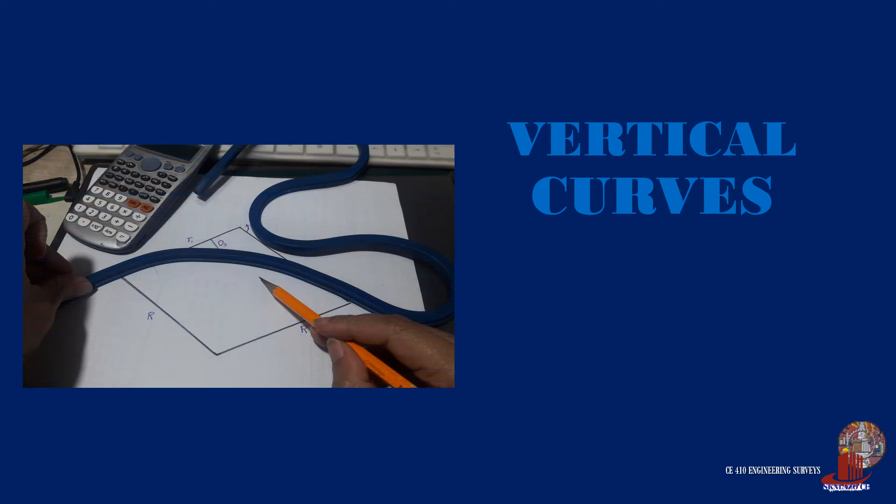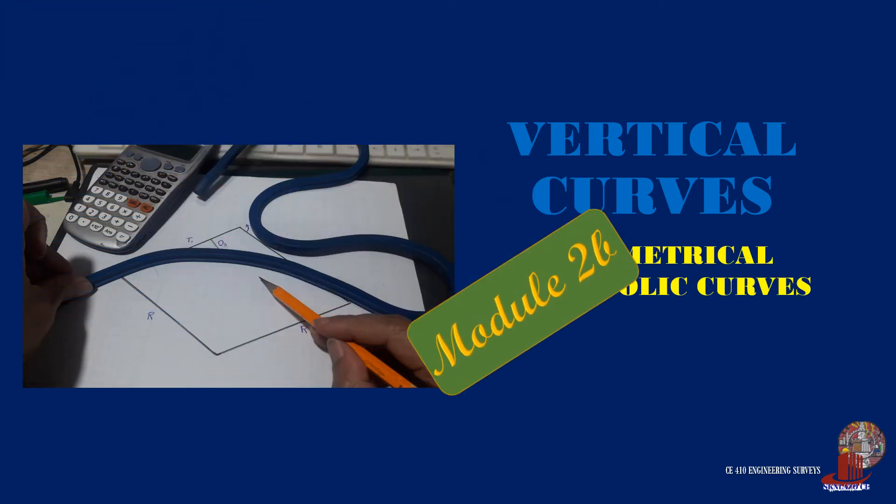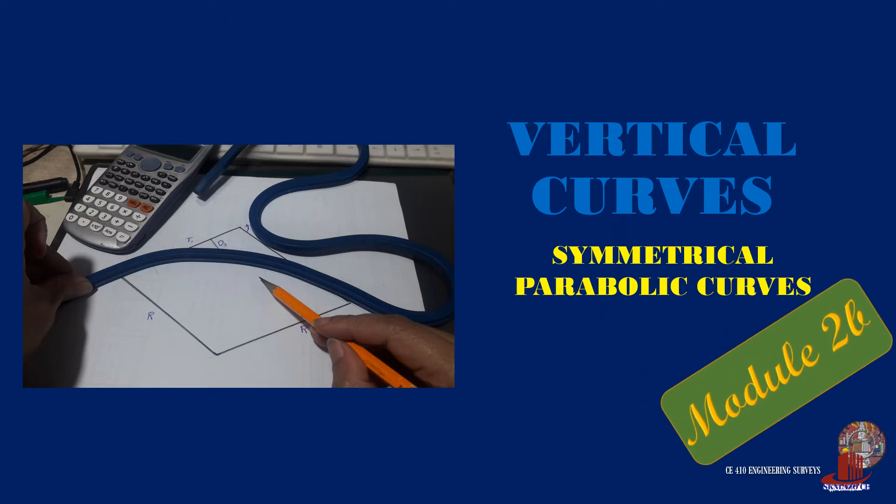Symmetrical parabolic curves are not geometrically symmetrical, but it is called so as it uses a single curve. The elements of such curve are taken both horizontally as stations and vertically as elevations. Check the examples here in Engineering Surveys.